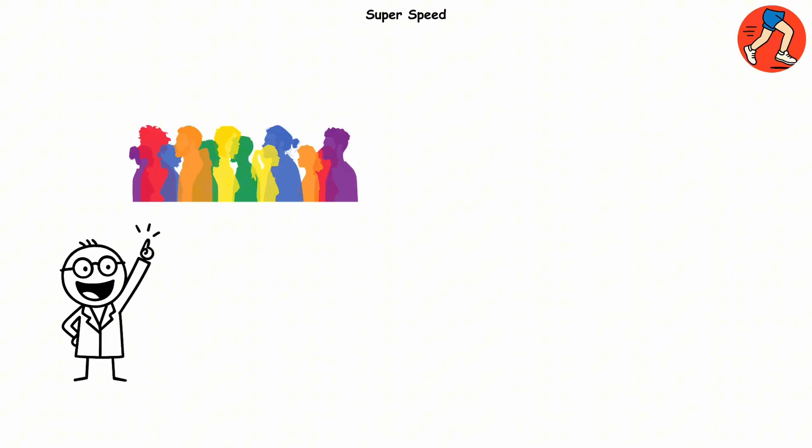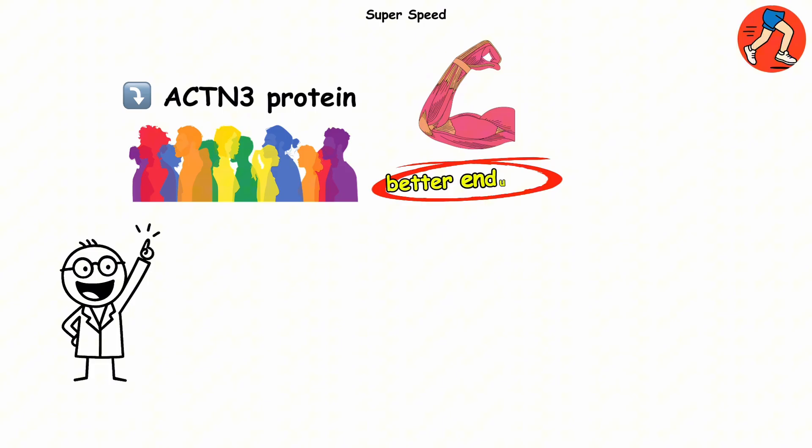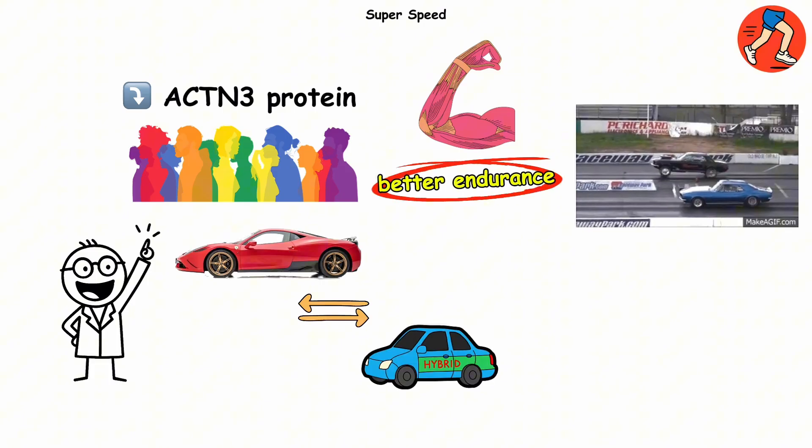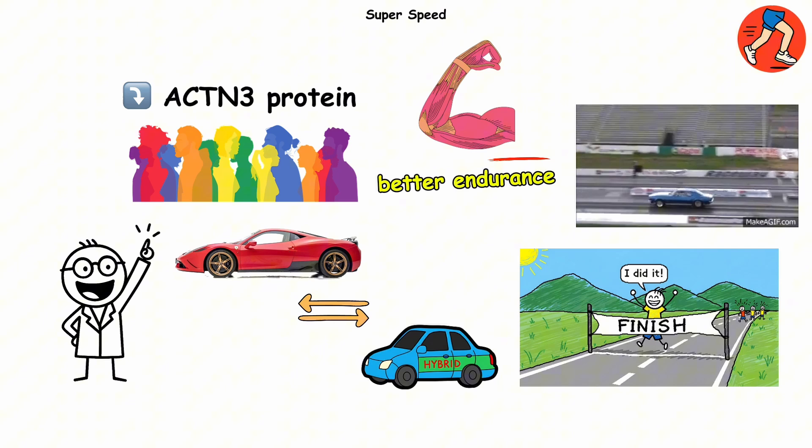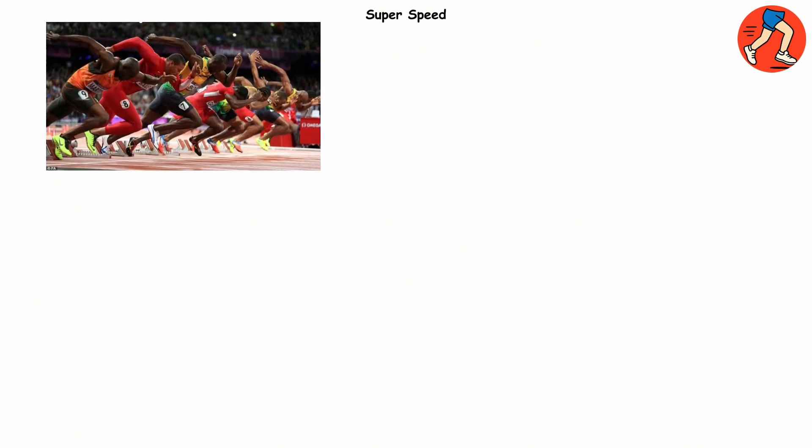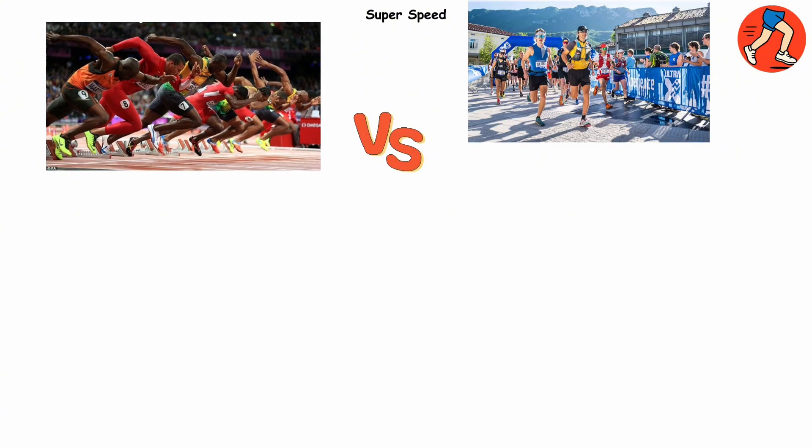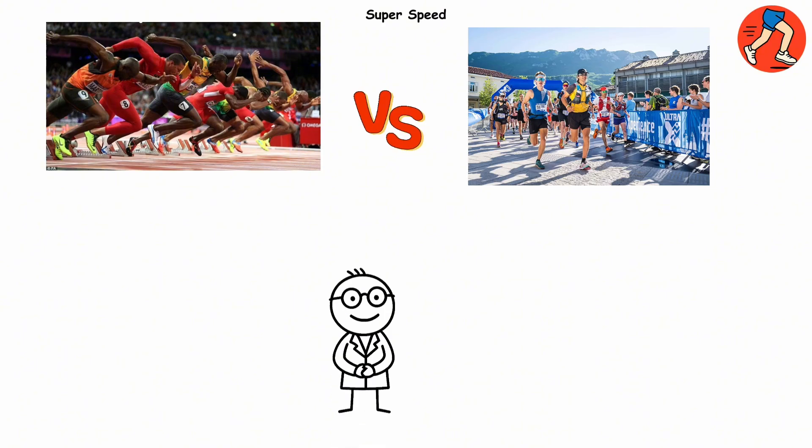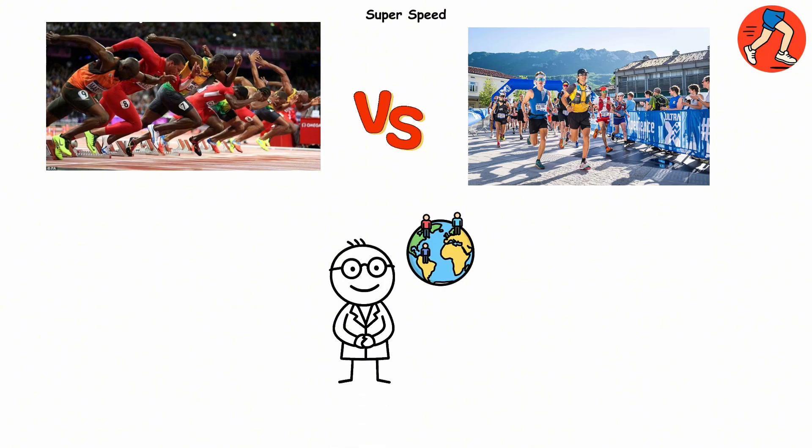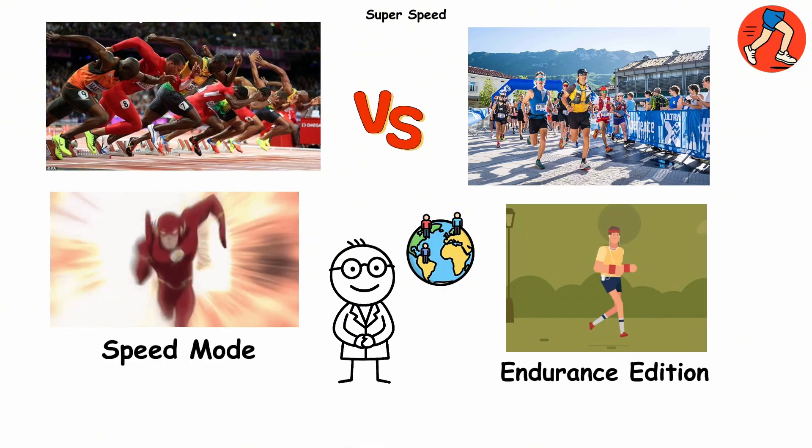Meanwhile, folks who produce less of the ACTN3 protein shift their muscle fibers for better endurance. It's like trading your Ferrari for a hybrid. You won't win the drag race, but you'll outlast everyone on the highway. That's why elite sprinters often produce much more of this protein compared to ultramarathon champs. Evolution basically gave humanity two builds. Speed mode and endurance edition.